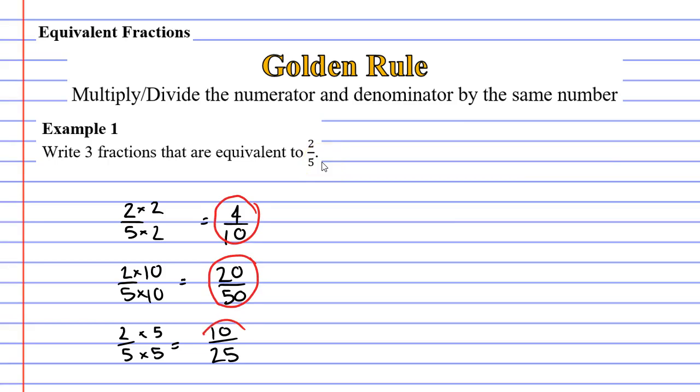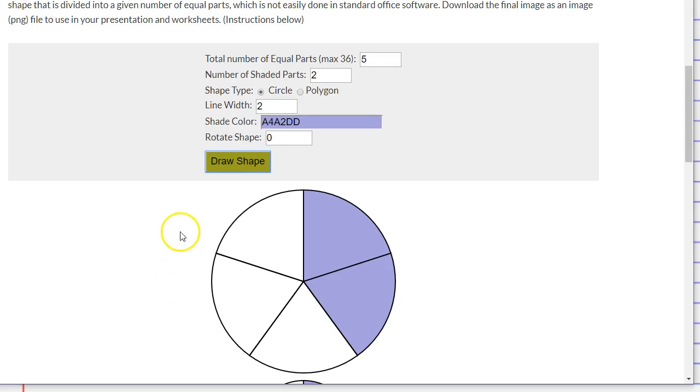So we now have three equivalent fractions to 2/5. In fact, I'm going to show you some images that prove that these are equivalent. I've been able to bring up a fraction maker program. And this is the fraction 2/5, the fraction we started with. And you'll notice if we look up here, this 5 gives us our denominator and the 2 below it is our numerator.